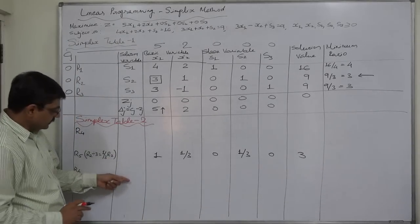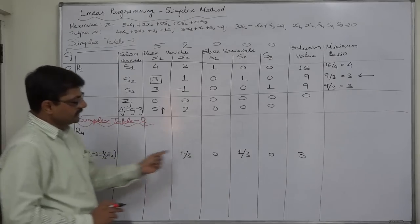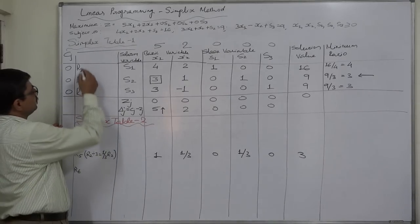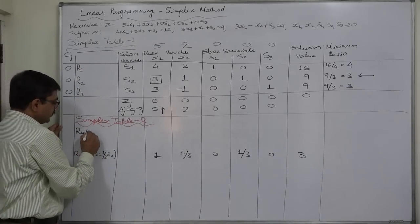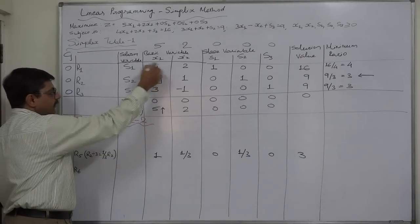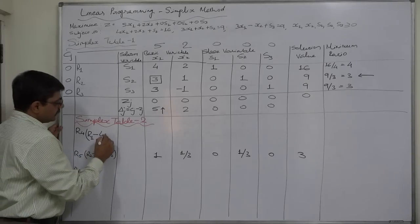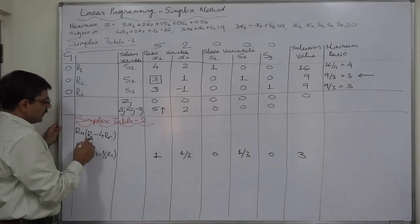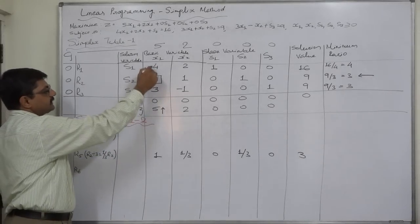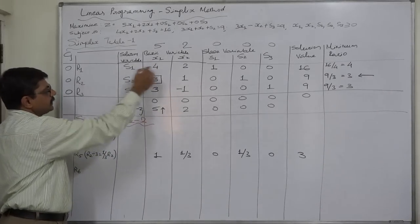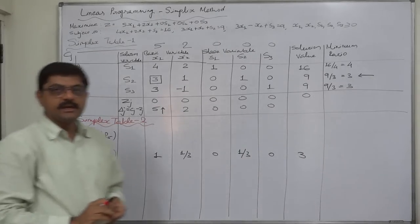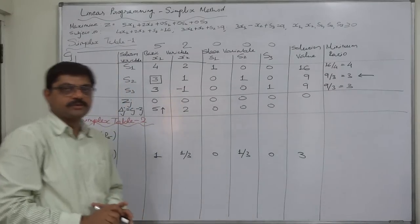To prepare the first and third rows of the new table, we will use this row as our instrument. Now it is the turn of R4, which will take the place of R1. The formula is: old row R1 minus the element in the key column multiplied by the replaced row. That is the easiest part of the simplex method.